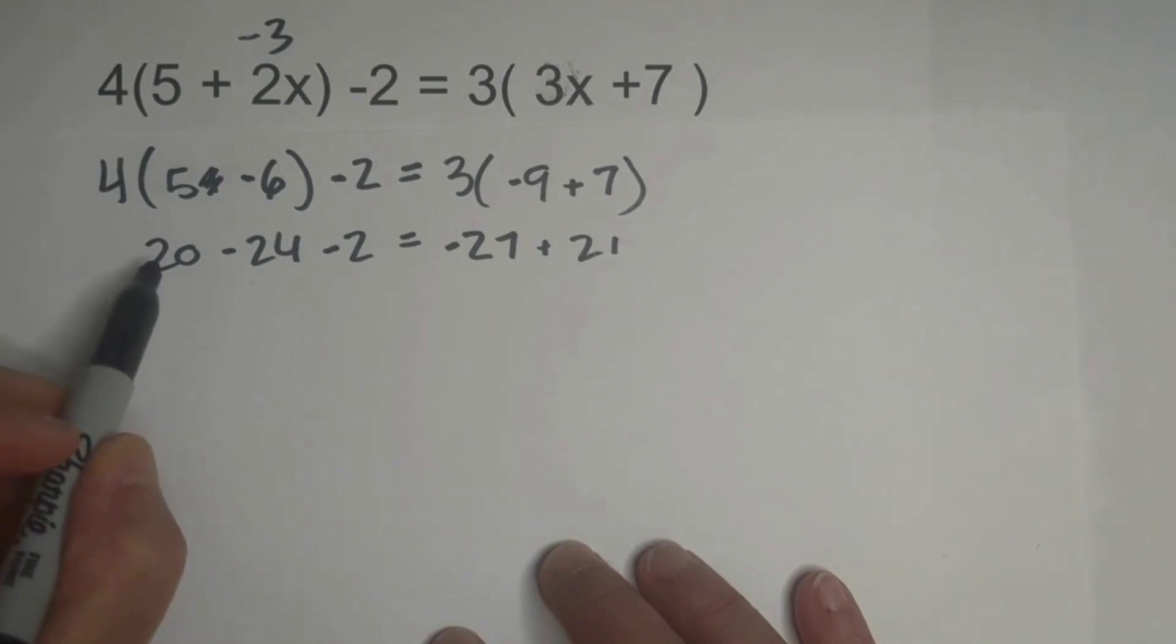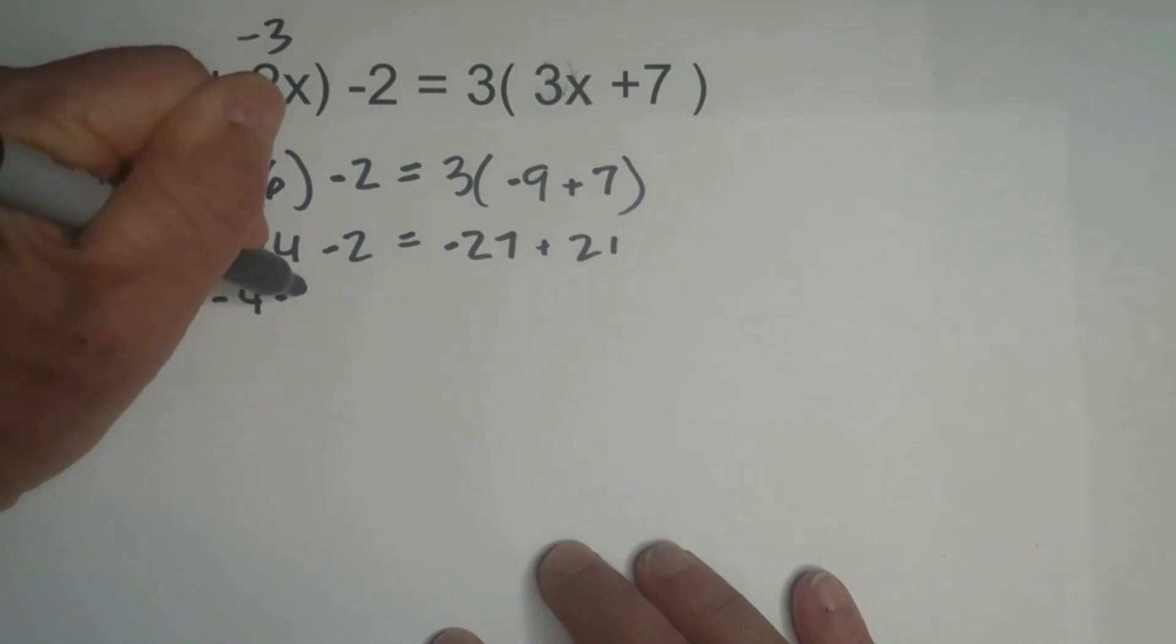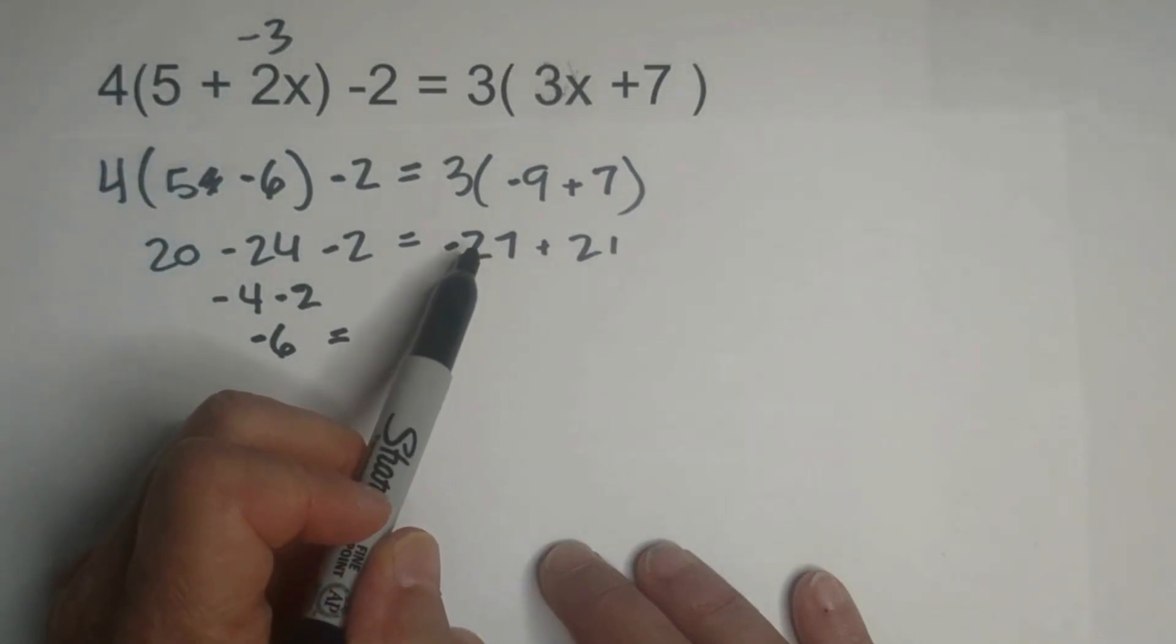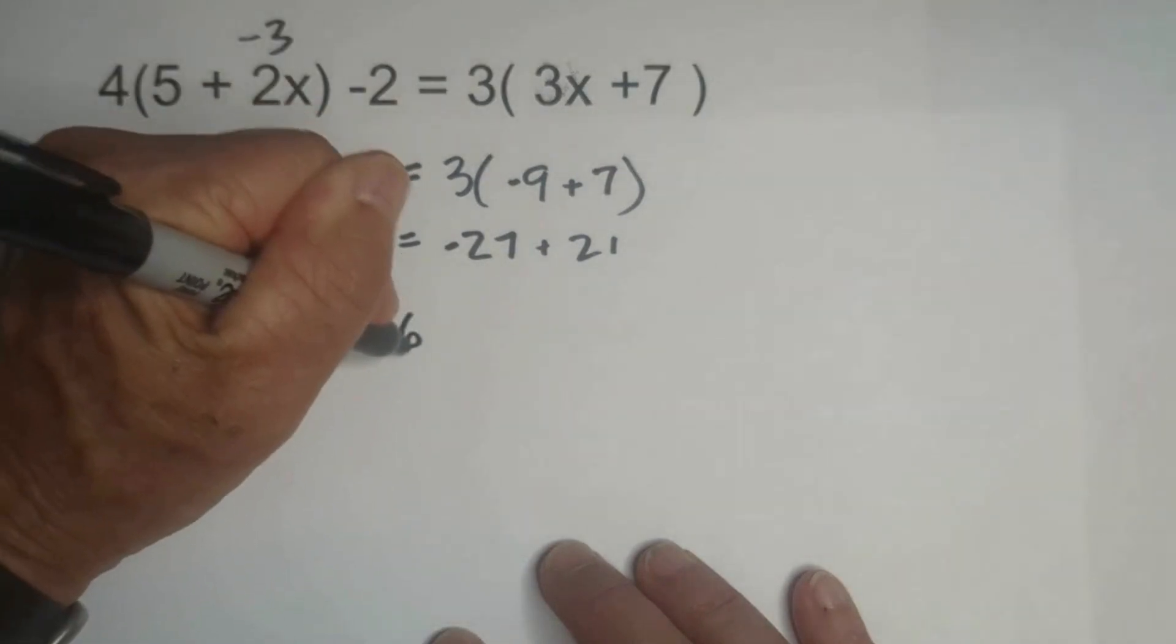Now, let's combine like terms, 20 minus 24 is a negative 4, minus a negative 2 equals a negative 6, and if the answer is correct, it should be a negative 6, negative 27 plus a positive 21 is indeed a negative 6.